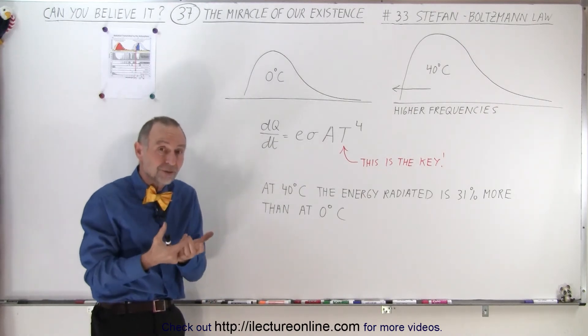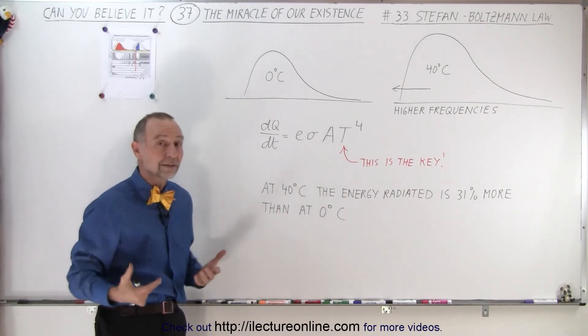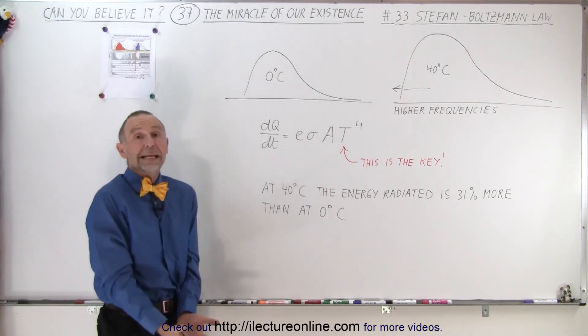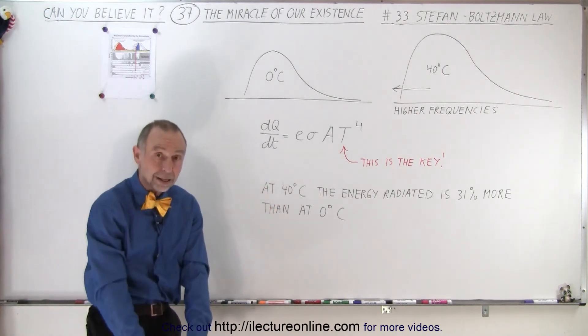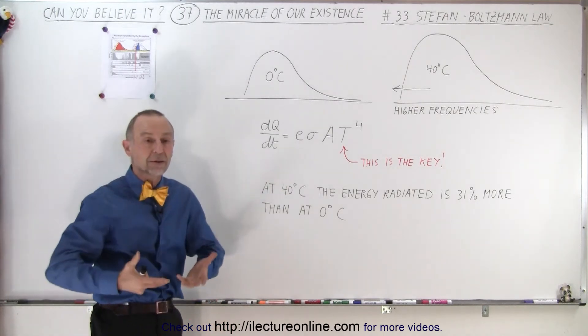So again, there's a certain thermostat that the Earth has to keep itself more or less at the right temperature. If it really cools down a lot, then the amount of radiation going to space drops by quite a bit. If it gets really hot, the amount of radiation going to space increases quite a bit.